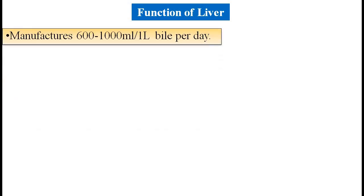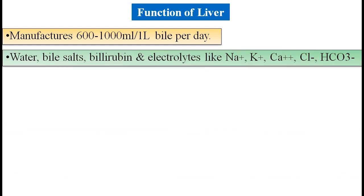Function of liver: the liver manufactures 600 to 1000 ml of bile per day. Bile is composed of water, bile salts, bilirubin, and electrolytes like sodium, potassium, calcium, chloride ions, and bicarbonate ions.